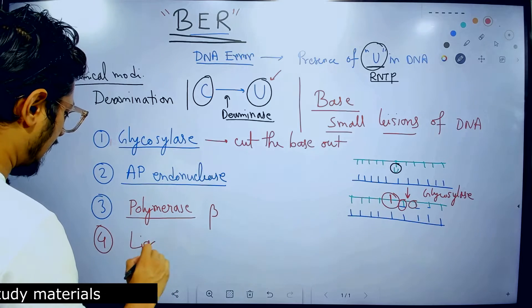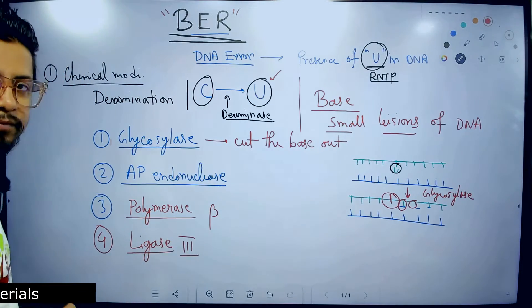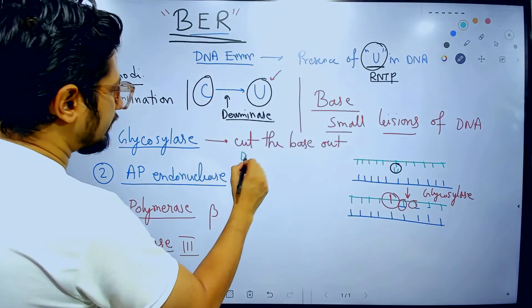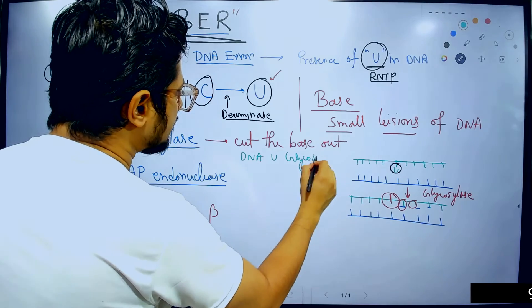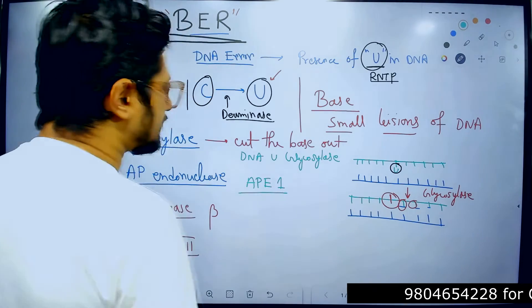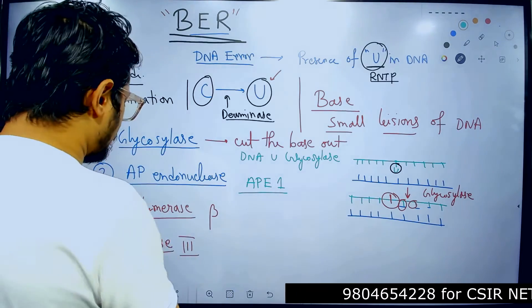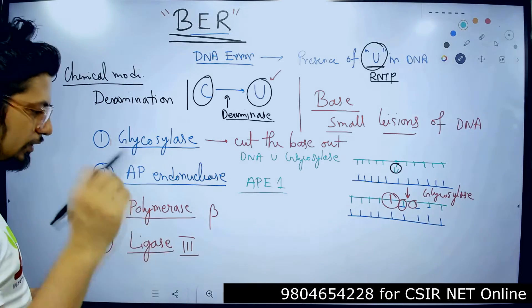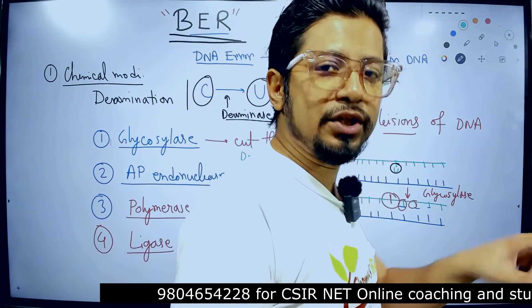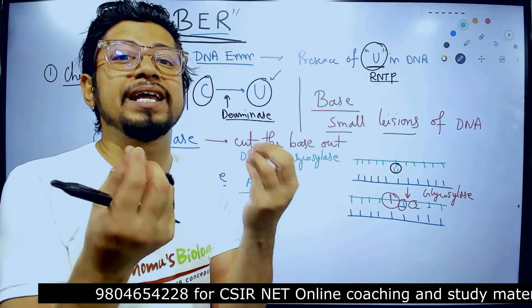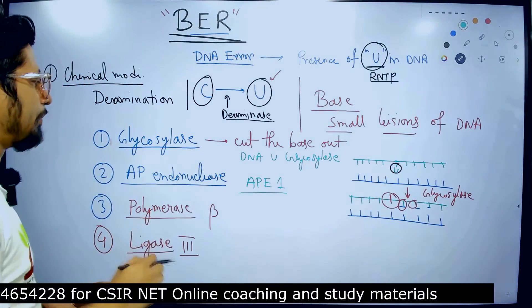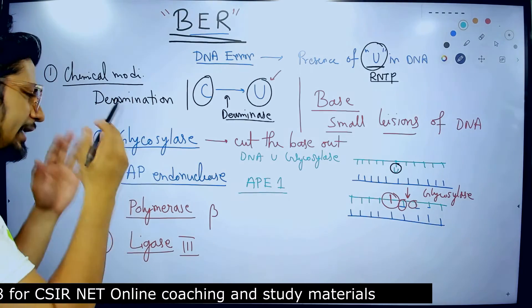The last step is ligation of the nick that is done by DNA ligase and particularly DNA ligase 3. So, these are the four different set of enzymes that are involved: glycosylase, DNA uracil glycosylase is the enzyme for the first step. The second step, AP endonuclease, AP endonuclease 1, APE1 is the second set of enzymes involved. The third set of enzyme while filling the gap is polymerase beta and the fourth set of step, the ligation of the nick is done by DNA ligase 3. So, these are the four sequential steps involved in the process of base excision repair.